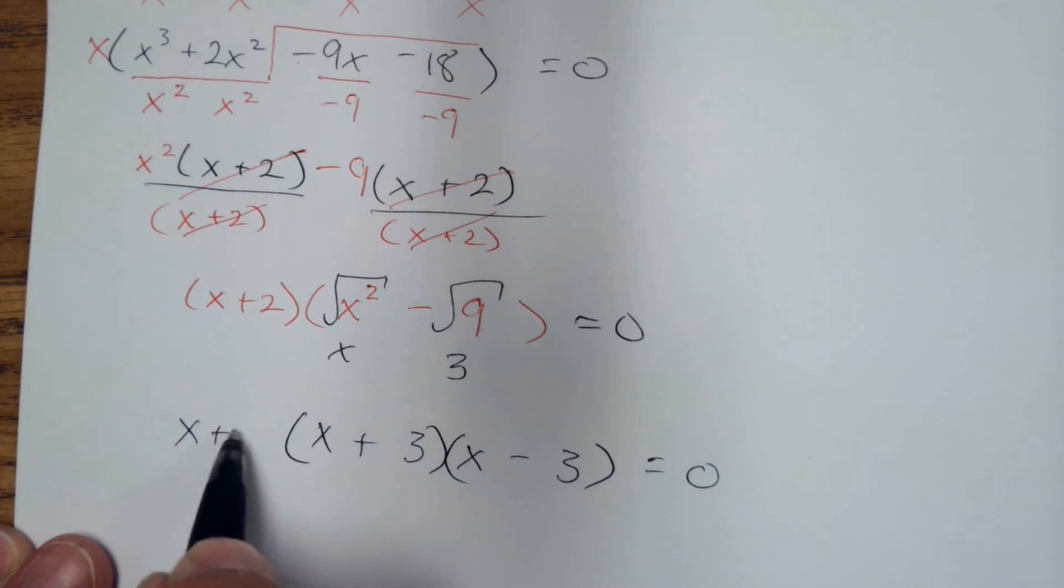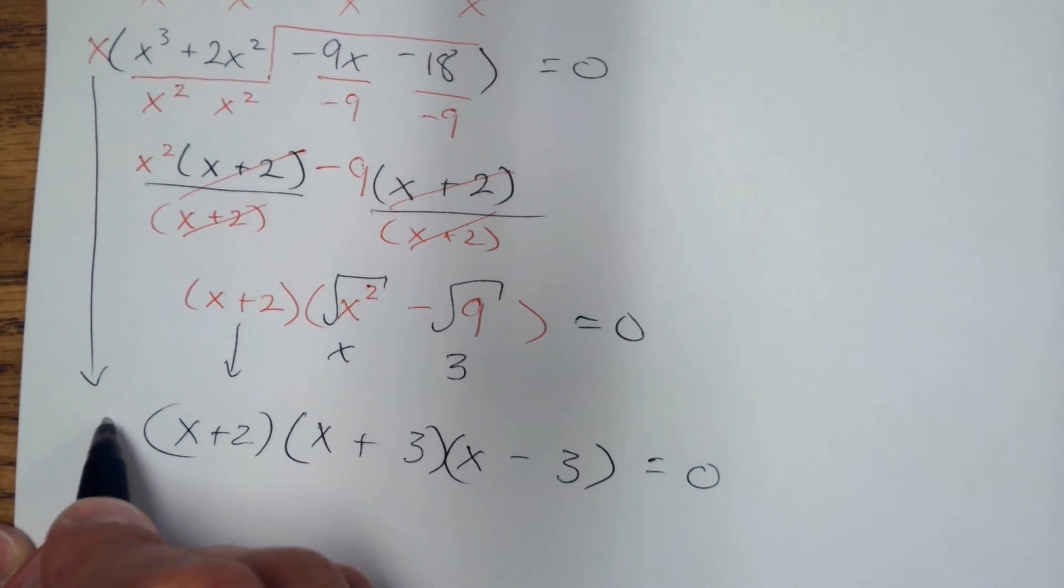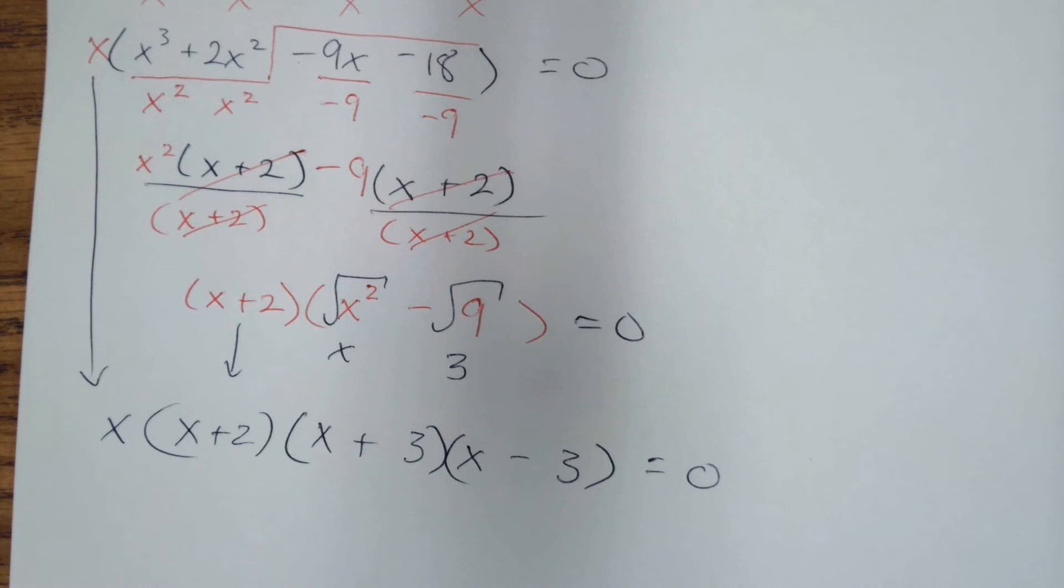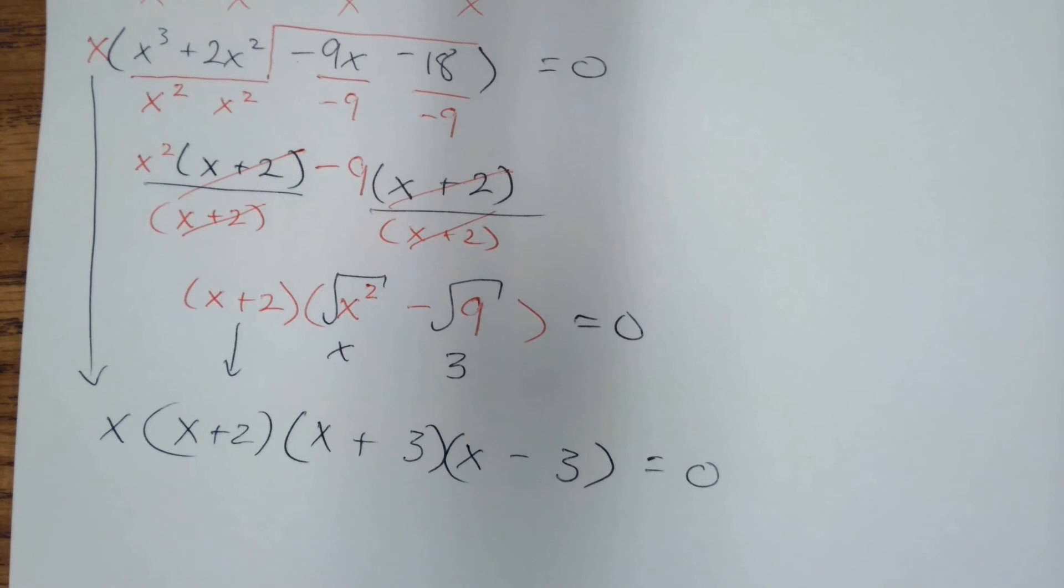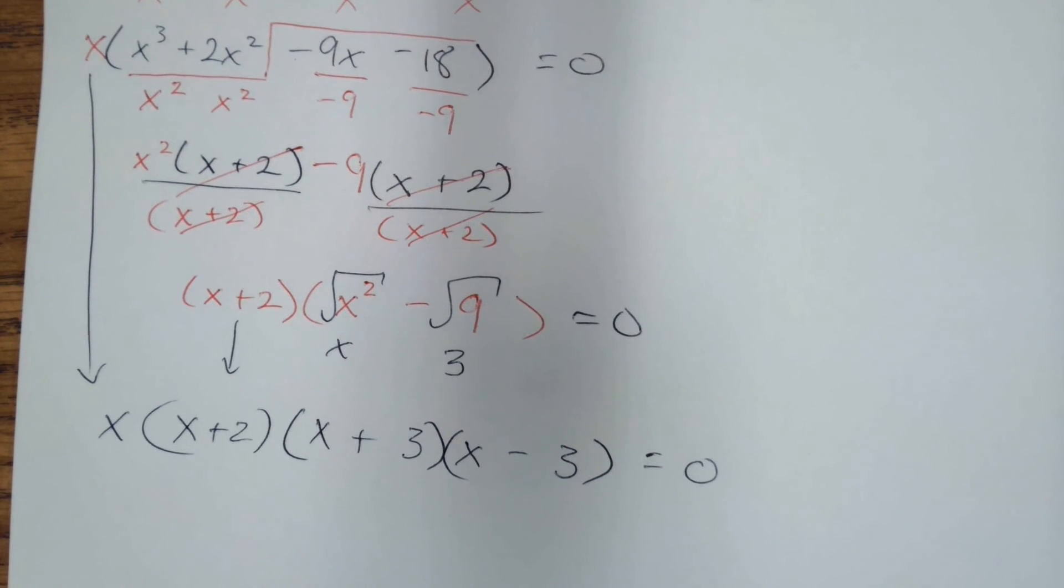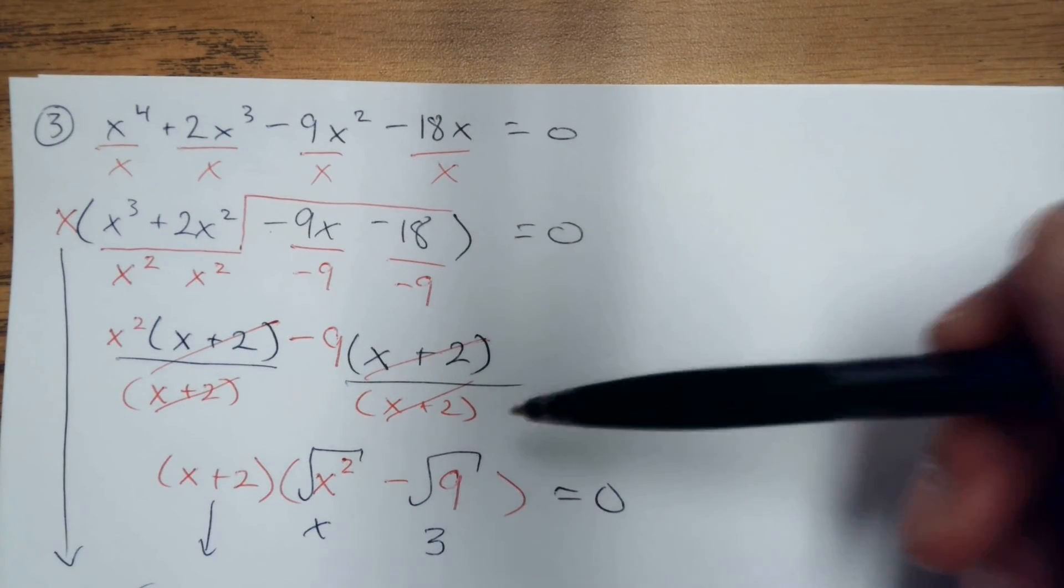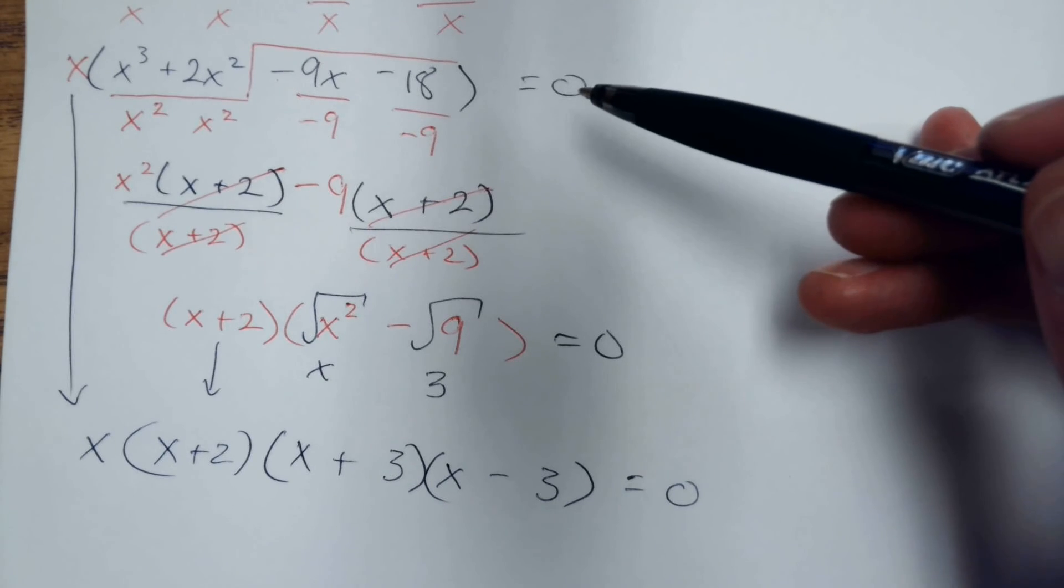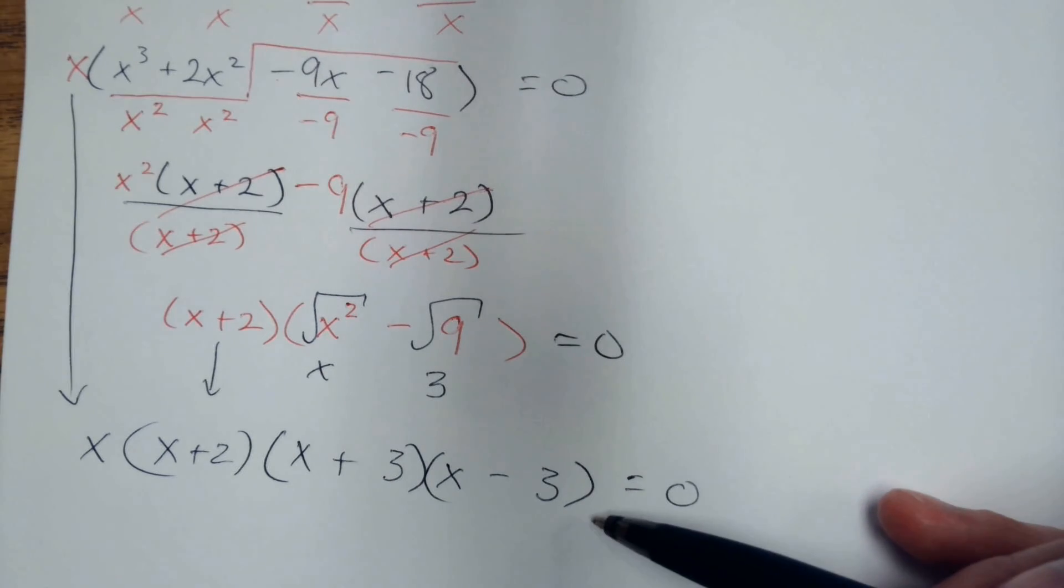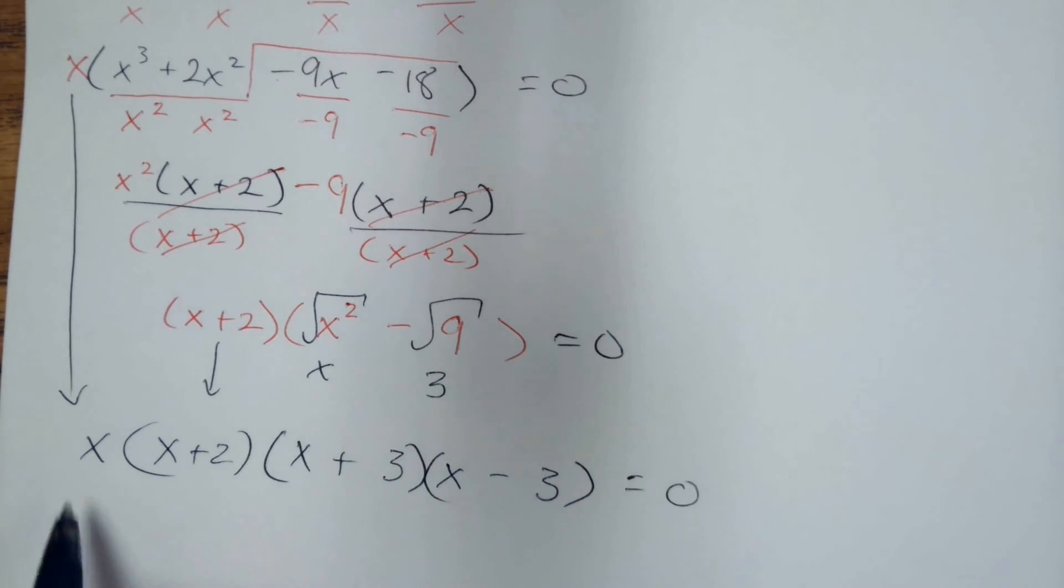Bring down this x plus 2. Bring down the x. And then the last part, whenever you have an equal sign and it says to solve by factoring—that's what the instructions were for this—you factor and then set each piece equal to 0.